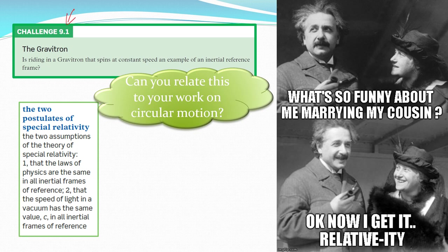A little question there, challenge 9.1: Is riding on a gravitron that spins at a constant speed an example of an inertial reference frame? Have a think about that. The resolution to this one is your speed may well be constant but your velocity is not constant and velocity is more important than speed because it includes the direction. Your velocity is changing because you are not travelling in a straight line, you are travelling around in a circle, so the direction you're moving is constantly changing. You are undergoing centripetal acceleration the whole time as we looked at back in unit 3. So therefore you are under acceleration, you do not really have an inertial reference frame.